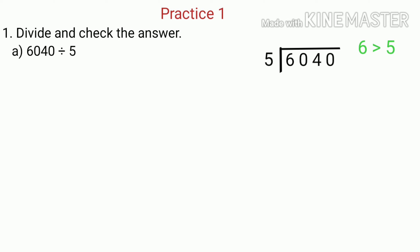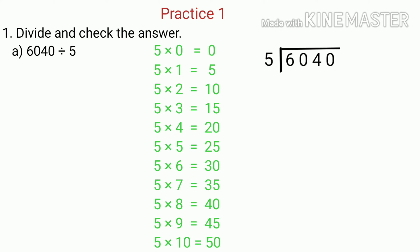Since 6 is greater than 5, we divide 6 by 5 — finding how many times of 5 is equal to or nearest to 6. We know that 1 time of 5 is 5 and 2 times of 5 is 10. Since 10 is greater than 6, we consider 5 as nearest to 6. So we write 1 as the quotient above 6. Since 5 multiplied by 1 is 5, we write 5 below 6 and subtract — 6 minus 5 gives us 1.